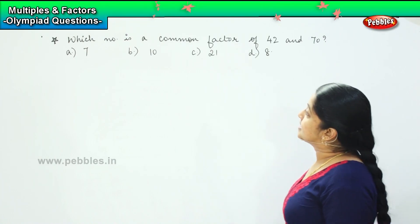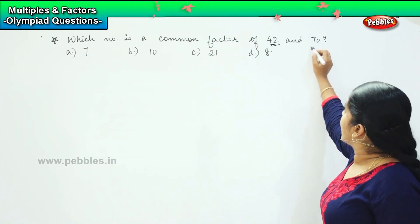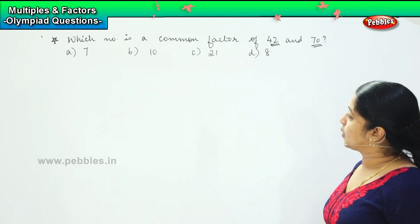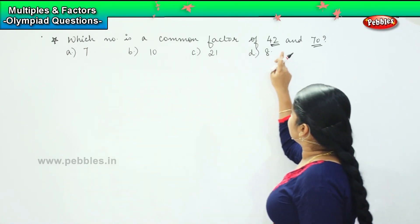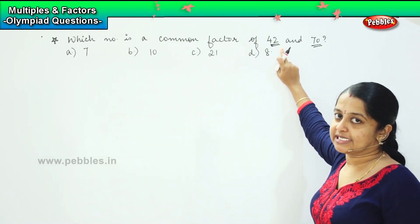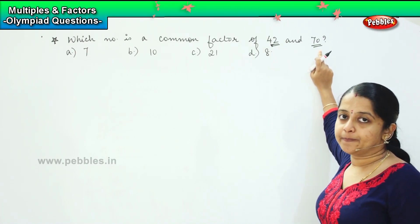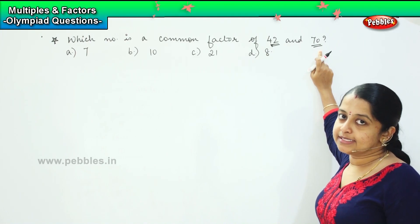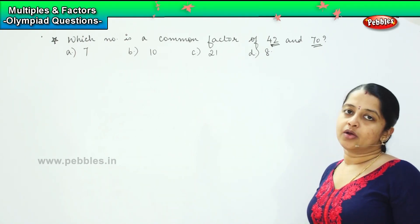The question says, which number is a common factor of 42 and 70? Let us start with the first one, that is 7. Is 7 a factor of 42? Yes, 7 times 6 are 42. Is it a factor of 70? Yes, 7 times 10 is 70. So option A is the right one.